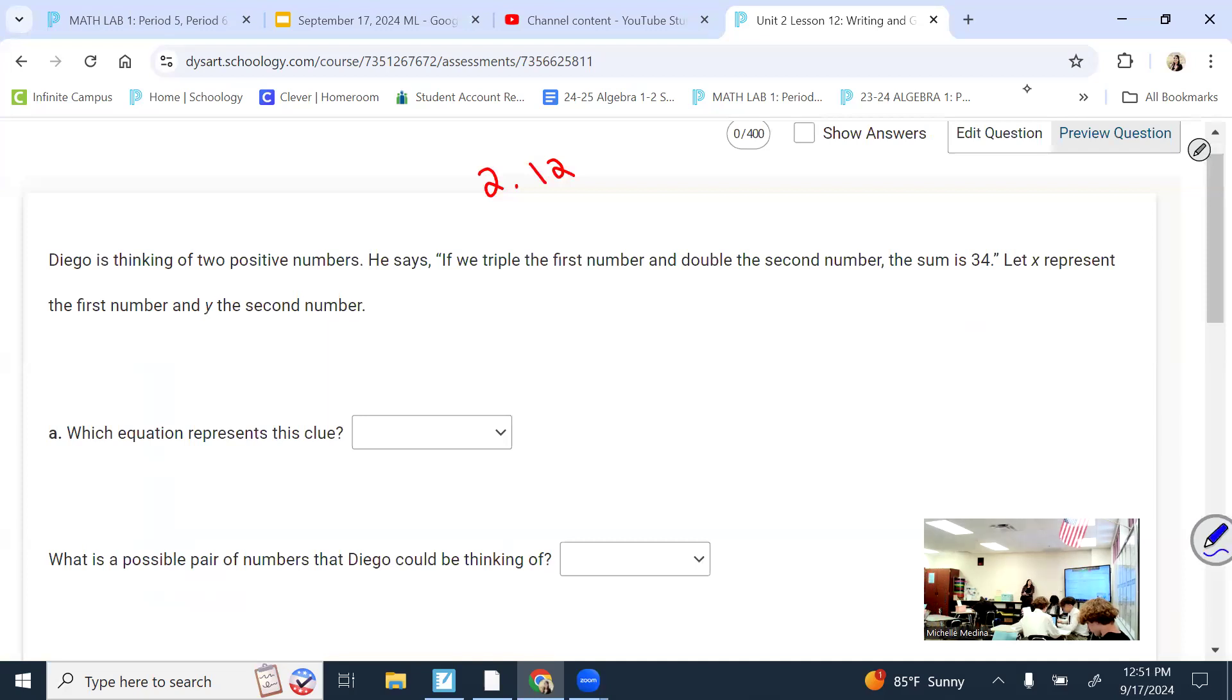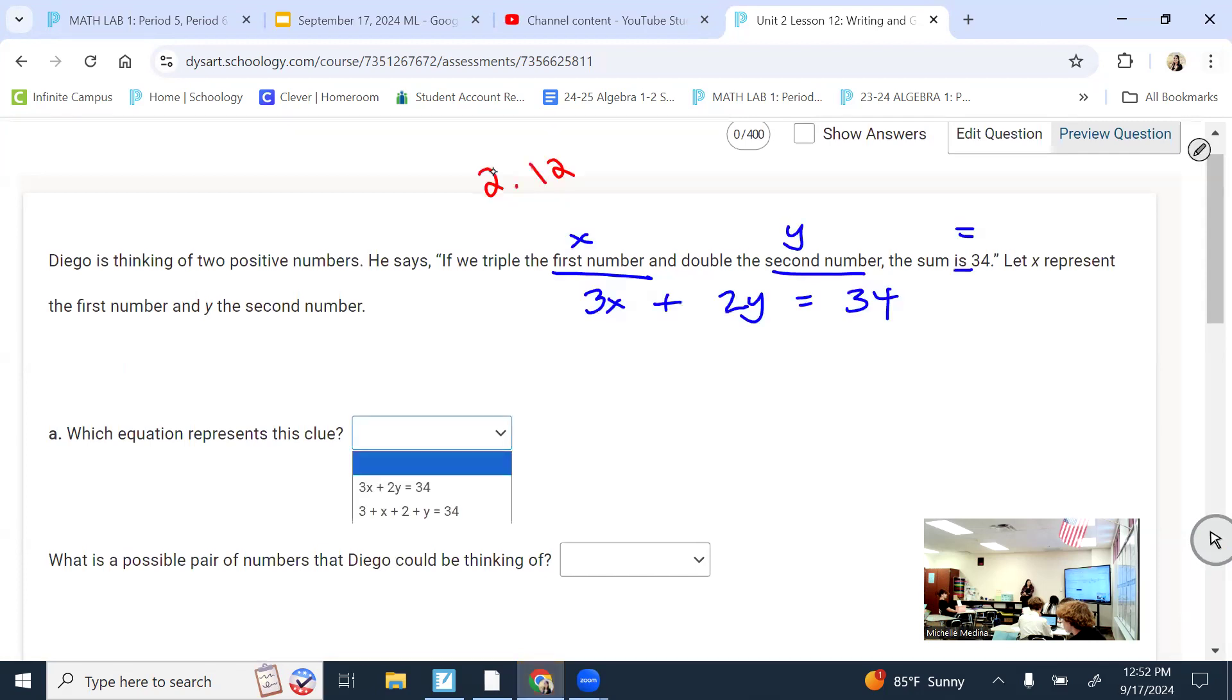They want the first number to be X. When we're tripling X, what math are we doing? Multiplication by 3, right? And then we're doubling the second number. They want the second number to be Y. When I double the second number, what math is that? Two times Y. So the sum of triple X and double Y, the sum means equals 34. So that will be one of these options. So double and triple mean multiplication by specific numbers.